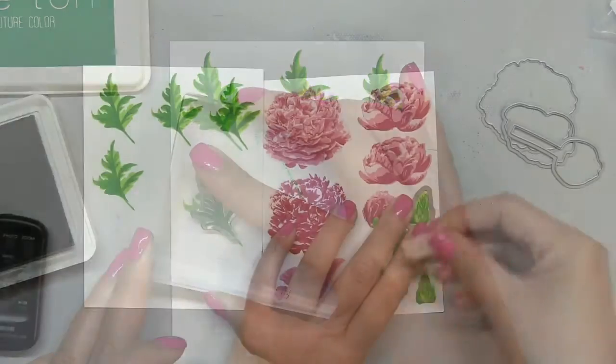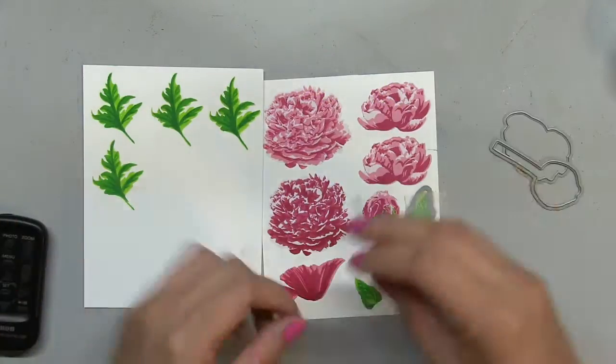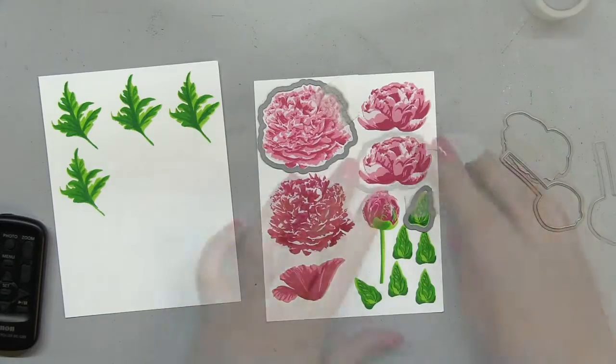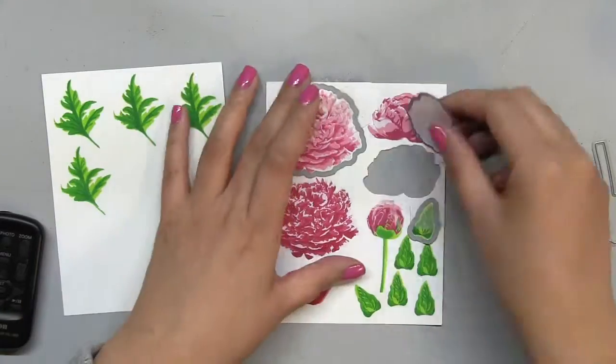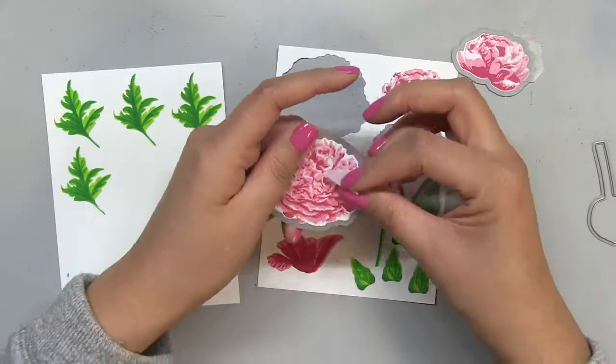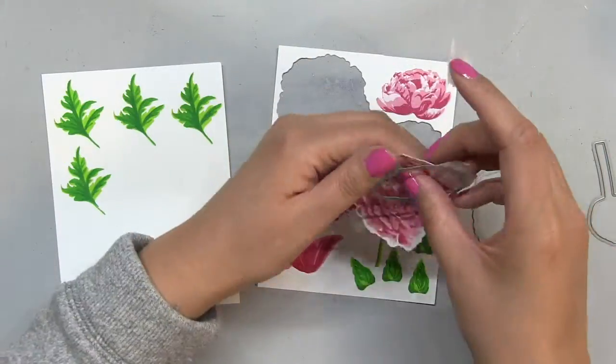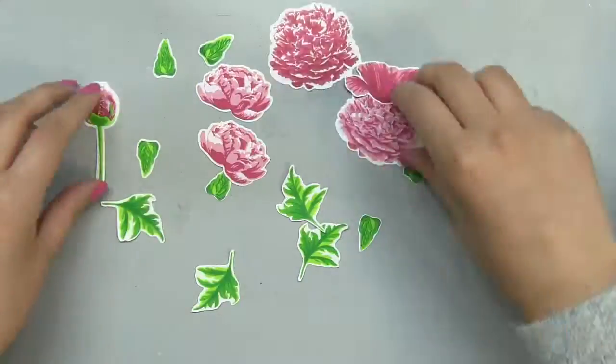Once I finish stamping, I'm going to die cut everything using the coordinating dies. However, for our Fresh Cut Poppies, the coordinating dies are not yet available, but they will be released in about a couple of weeks, so make sure you're following our Instagram and Facebook feeds so that you can get all the latest updates on new releases.